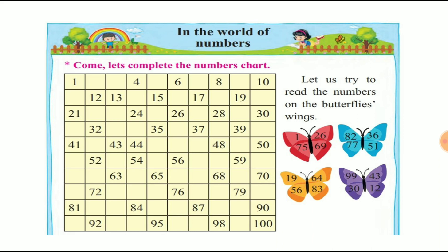Next number is 81, 82, 83, 84, 85, 86, 87, 88, 89, 90. So 81 to 90 in serial order.